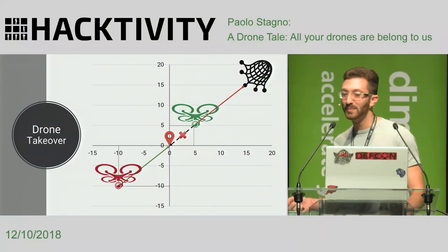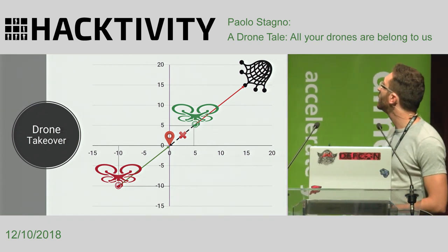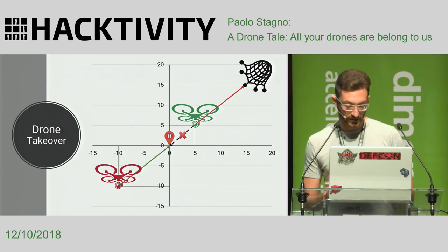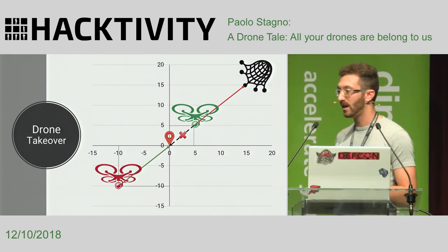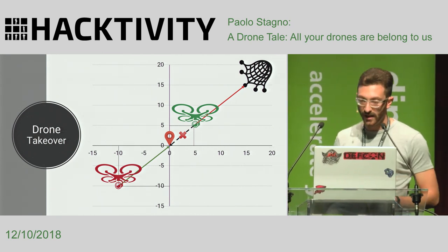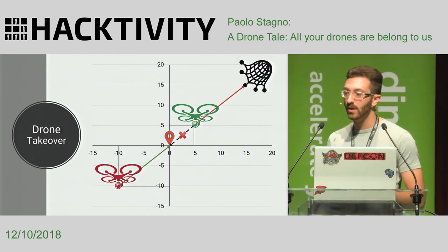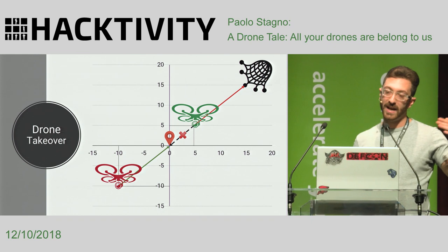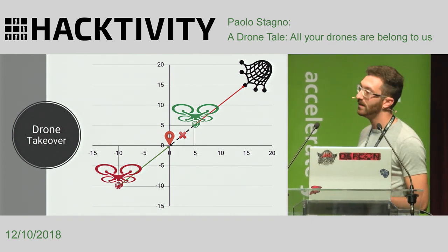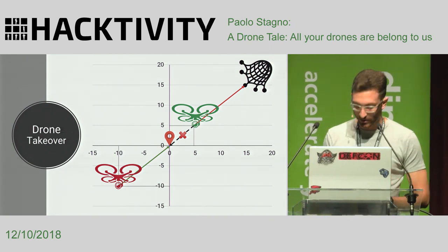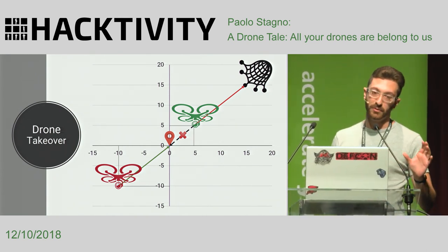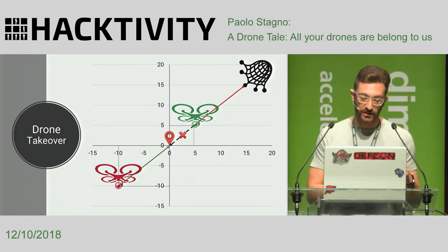This is the schema for performing a complete drone takeover with the right hardware. The real drone is on the green marker. Two different attacks are performed: first, a deauthentication attack against the main controller triggers the return-to-home functionality. At the same time, a GPS spoofing attack makes the drone think it is on the red marker. The drone will try to fly home, but in reality it will fly in the opposite direction to another location — so we can basically capture or shut down the drone. This concept combines the deauthentication attack and GPS spoofing together.